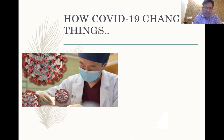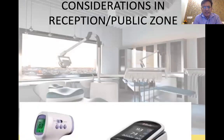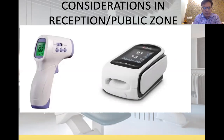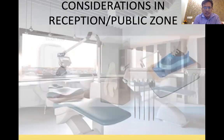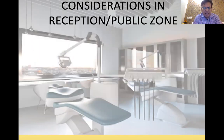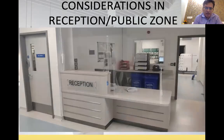COVID has changed things significantly. Tele-screening is now the norm — we schedule appointments, avoid crowding in the reception, and patients are told to wait in the car before being called in by telephone. Every operatory now requires specific equipment: a thermal scanner, a pulse oximeter, a shoe cover dispenser, a glove dispenser, and a touch-free hand sanitizer system, all of which need to be factored into your clinic plan.